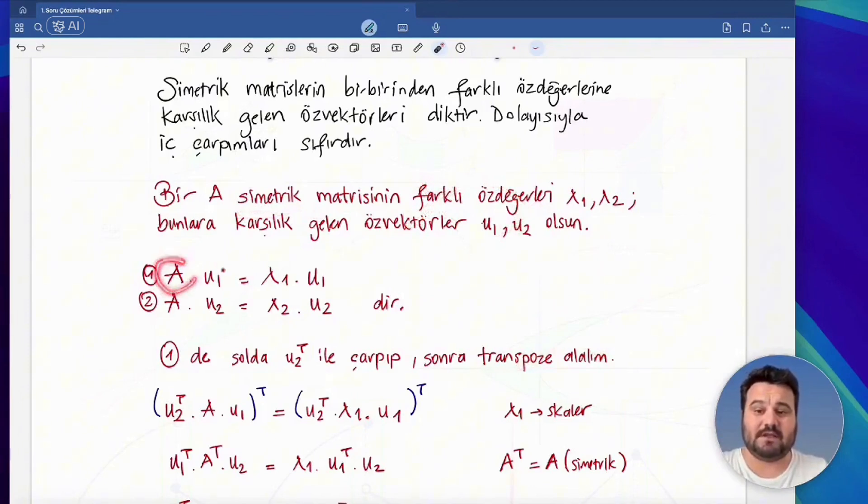Now, by definition, when we multiply the matrix by its eigenvector, we go to the multiple of this eigenvector by its eigenvalue. So, then what would A times u1 be equal to? Lambda 1 times u1. What about A times u2? Lambda 2 times u2.